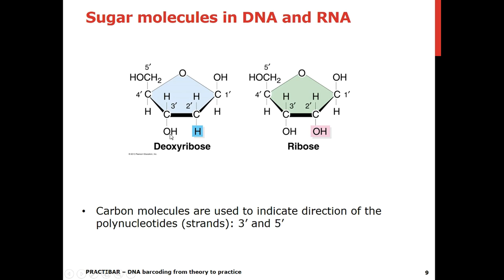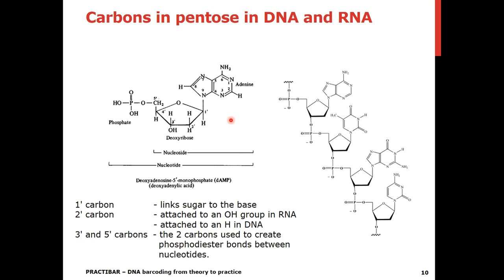When we talk about the orientation of a DNA or RNA molecule, we are talking about 5' and 3' ends. These names are derived from the carbon atoms present in the sugar molecule — 1', 2', 3', 4', and 5'. The 1' carbon links the sugar molecule to the nitrogenous base. The 2' carbon is attached to a hydroxyl group in RNA and to a hydrogen atom in DNA. The 3' and 5' carbons are used to create a phosphodiester bond between the nucleotides.